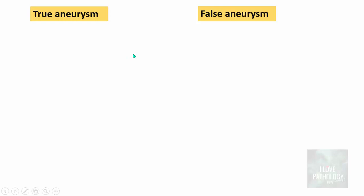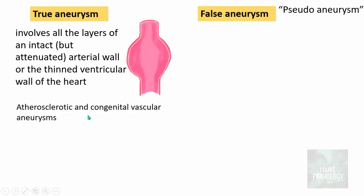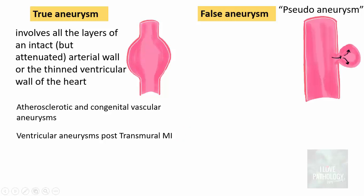Aneurysms can be classified as true aneurysm and false aneurysm. False aneurysm is also referred to as pseudoaneurysm. A true aneurysm involves all the layers of an intact arterial wall or the thin ventricular wall of the heart. For example, atherosclerotic and congenital vascular aneurysms are true aneurysms. Ventricular aneurysms, particularly post-transmural myocardial infarction, are also examples of true aneurysm.